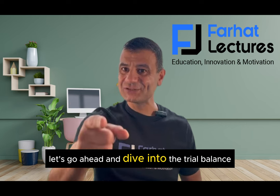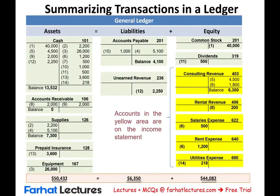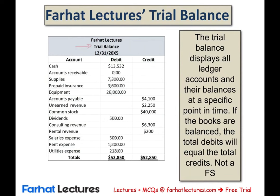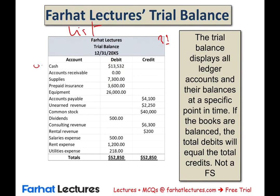Let's start where we left off in the prior session — the ending balances for each account: assets, liabilities, common stock, dividends, revenues, and expenses. From those ending balances we prepare the trial balance. The trial balance is a list of all accounts with their ending normal balances. For example: cash has a debit balance of 13,532; accounts receivable is zero; supplies has a debit balance of 7,300; and so on.